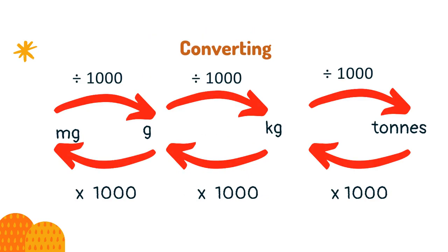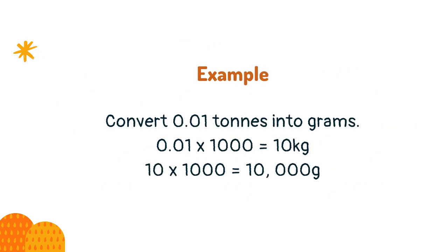Use this chart to help you convert between metric units. Convert 0.01 tons into grams. 0.01 times 1000 is 10 kilograms. 10 times 1000 is 10,000 grams.